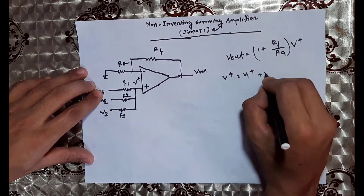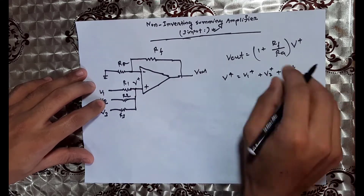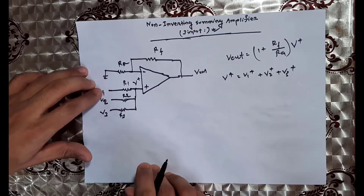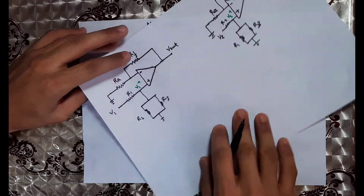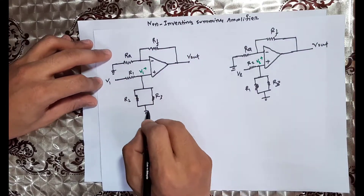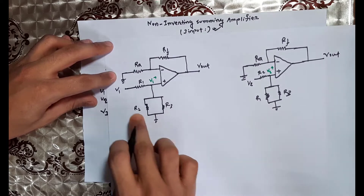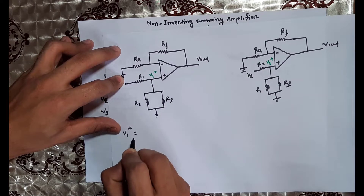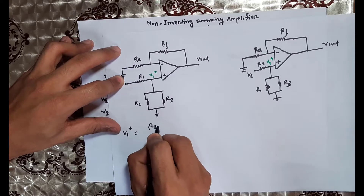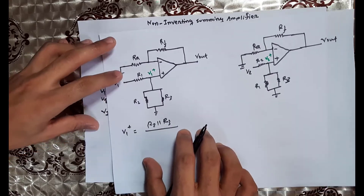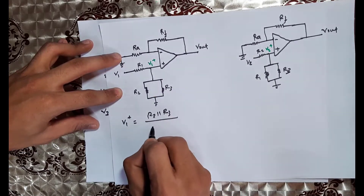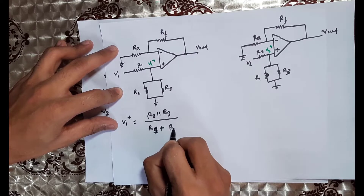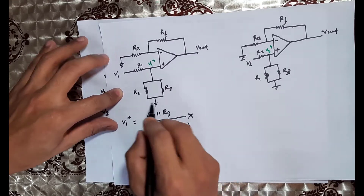When V1 is active, V2 equals zero and V3 equals zero. Then V+ due to V1 equals R2 parallel R3 divided by R1 plus R2 parallel R3, multiplied by V1.